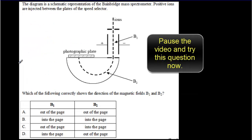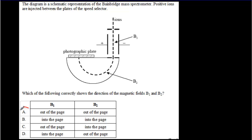Okay, a second question. Pause the video, try it out, and then come back for the answer. And hopefully you said A. And the reason for that is that you've got an electric field that's pointing this way in the speed selector region.